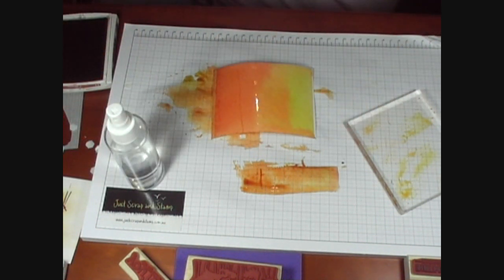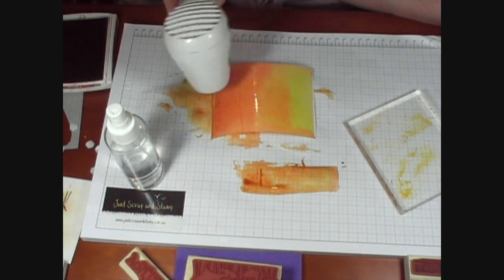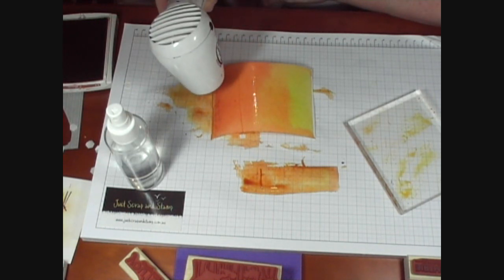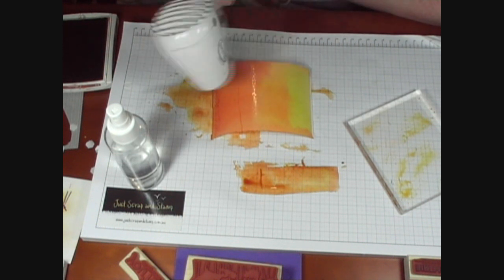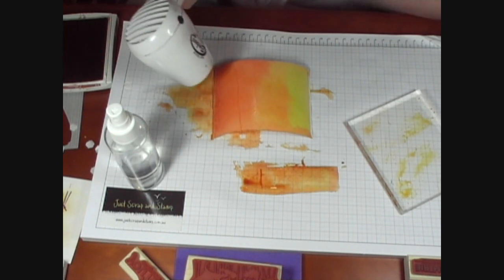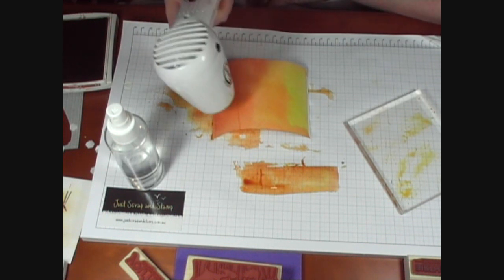Now to speed up the drying time, you can use your heat tool because the paper is quite wet. So we'll just very quickly use our heat tool to absorb all the water into the paper. You see it curling up there, and as it dries it will flatten back out again.